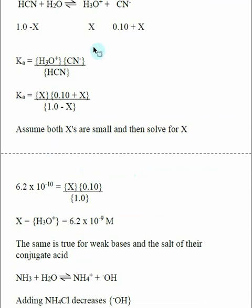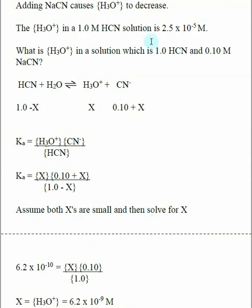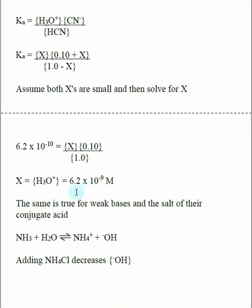X, as we stated up here, is equal to our concentration of hydronium, which is 6.2 times 10 to the minus 9. Without the conjugate base it was 2.5 times 10 to the minus 5, with the conjugate base, 6.2 times 10 to the minus 9.